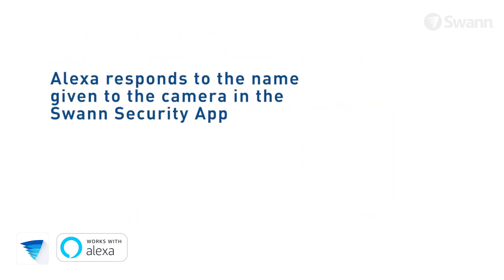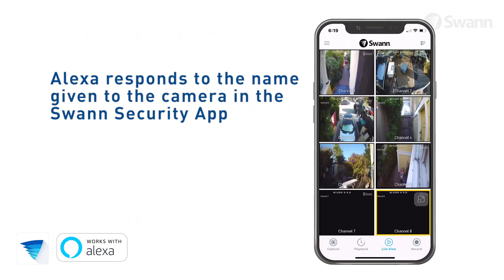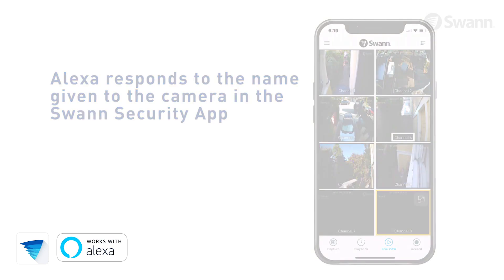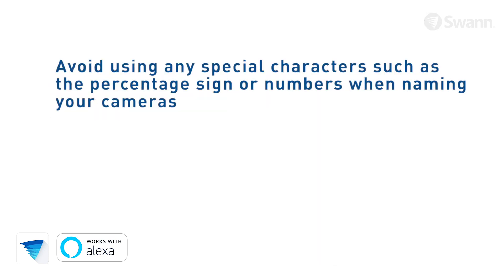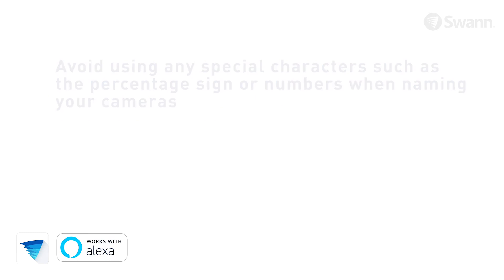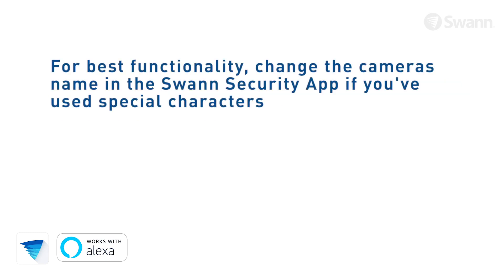By default, Alexa responds to the name assigned to your camera or channel in the Swan Security app. Avoid using any special characters, such as the percentage sign or numbers. You may want to consider changing the name of your camera if you've used special characters.